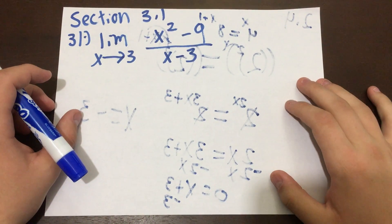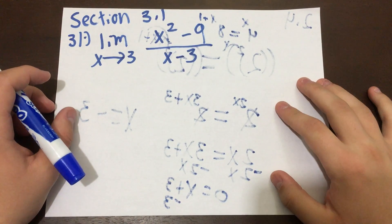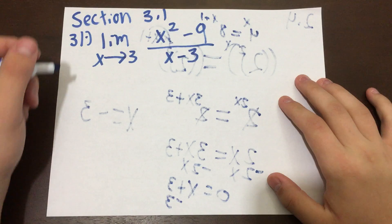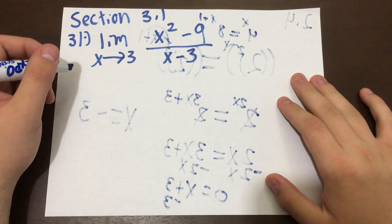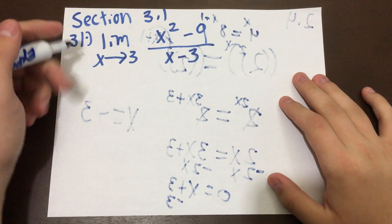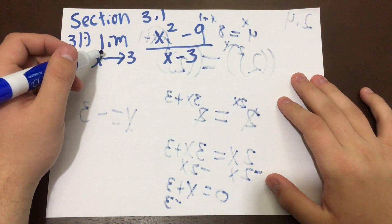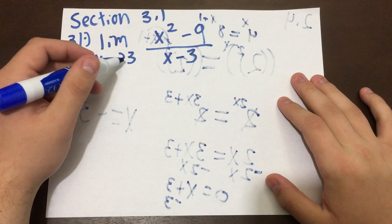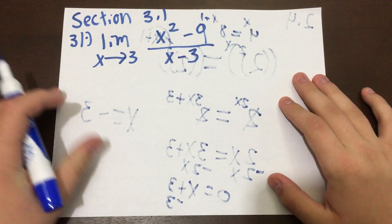Okay, so now we're going to be doing section 3.1, question number 31, because I actually took the time and wrote the question number down. All right, so we're going to be finding the limit as x approaches 3.